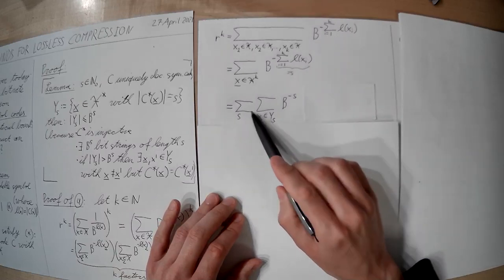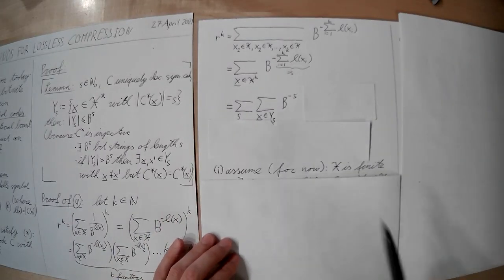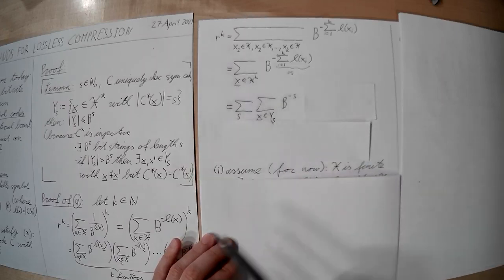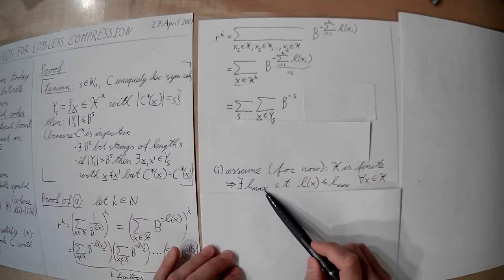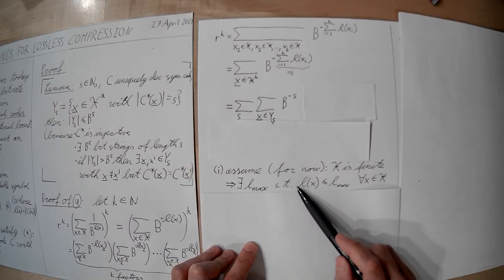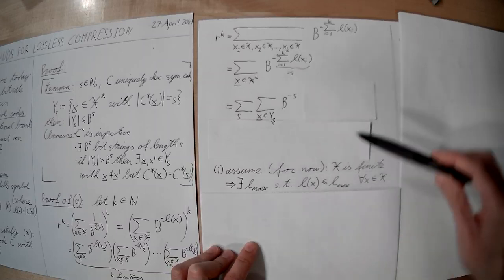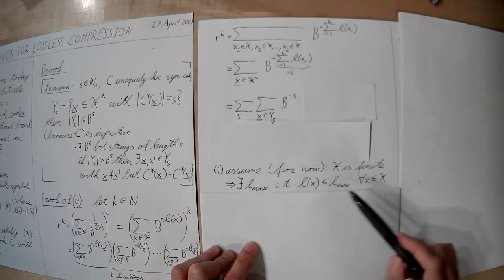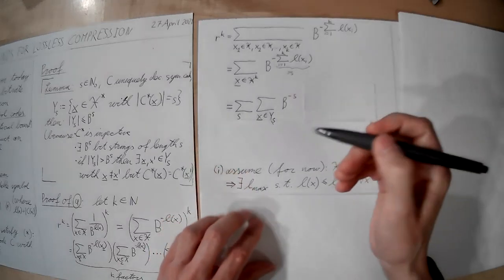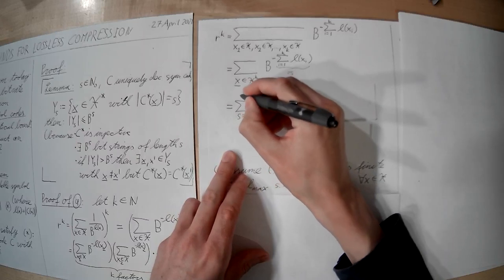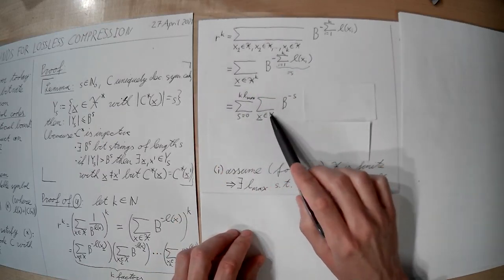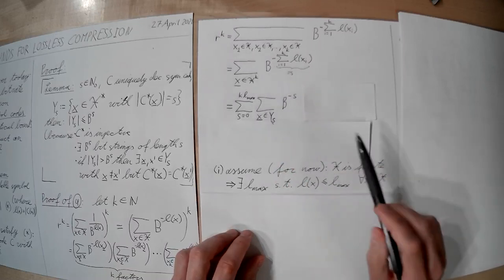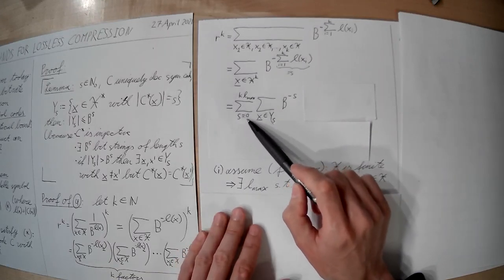What are the limits for the sum over s? Assuming the alphabet is finite, there is some maximum codeword length l_max. For a message of k symbols, the concatenation of all codewords has length at most k·l_max. So s runs from 0 to at most k·l_max. If there is no message whose encoding has length k·l_max, the set Y_s would just be empty, so that term would be zero.